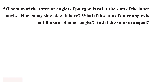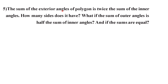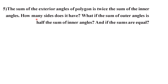Question number 5. The sum of the exterior angles of a polygon is twice the sum of the interior angles. How many sides does it have? There are 3 conditions: the exterior angle sum is twice the interior, half the interior, or equal to the interior. The sum of interior angles is (n−2) × 180 degrees.